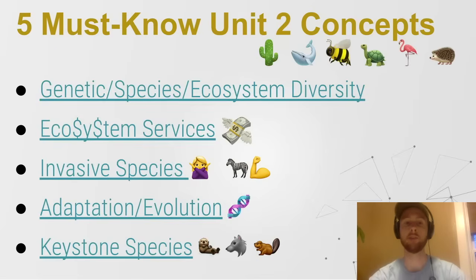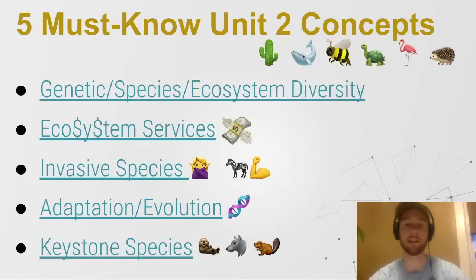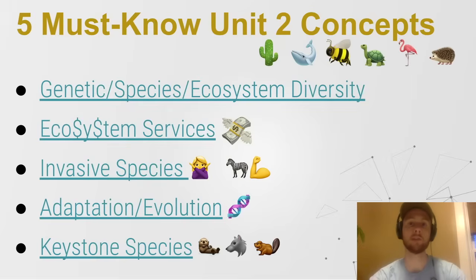Now onto Unit 2. We have biodiversity — genetic, species, and ecosystem. Remember these are the three ways that we measure biodiversity. Biodiversity is good because it makes populations more resistant to disturbance and makes ecosystems more likely to recover from a disturbance. Then we have ecosystem services — things that have monetary value to humans that nature does for free. The example of wetlands storing excess water that lessens storm damage is a great example. Then we have invasive species — species not native to an area, typically introduced by humans, that drive down biodiversity by out-competing natives. The zebra mussel is a great example.